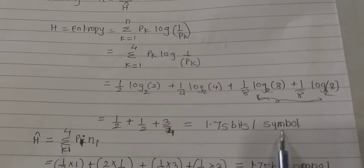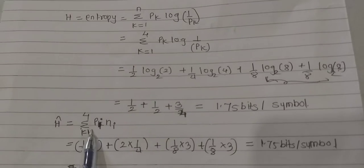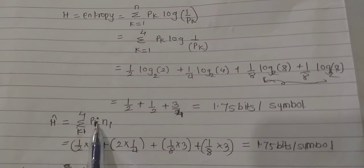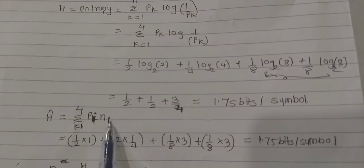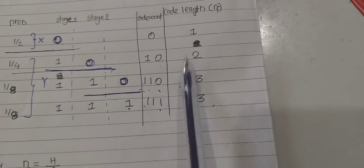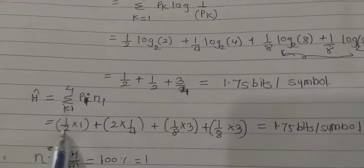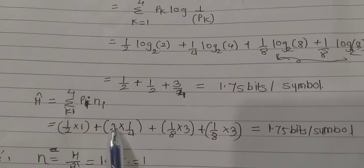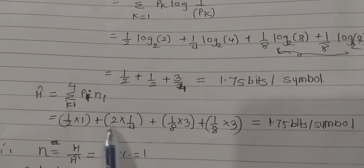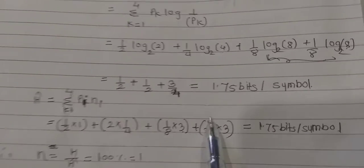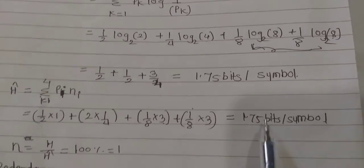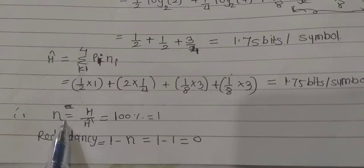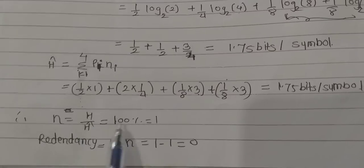After calculation, H = 1.75 bits per symbol. H_cap is the summation of p_i × n_i, where n_i is the code word length. So H_cap = (1/2)×1 + (1/4)×2 + (1/8)×3 + (1/8)×3, which also equals 1.75 bits per symbol.